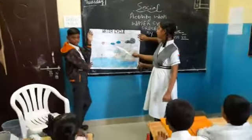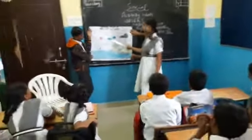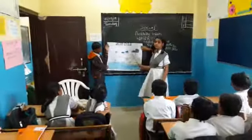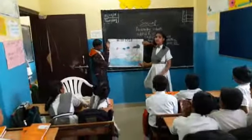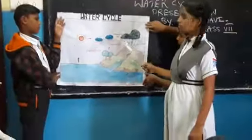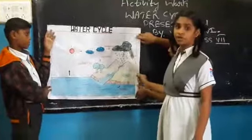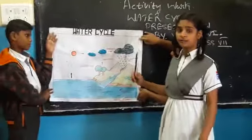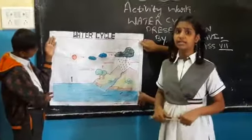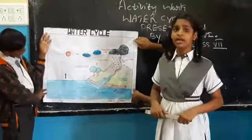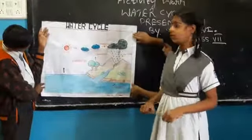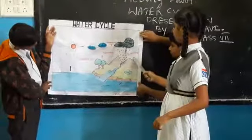The droplets which come into the cloud and which are heavier, that is known as condensation. And the water which comes from the sky in hail, rain, and snow is known as precipitation.